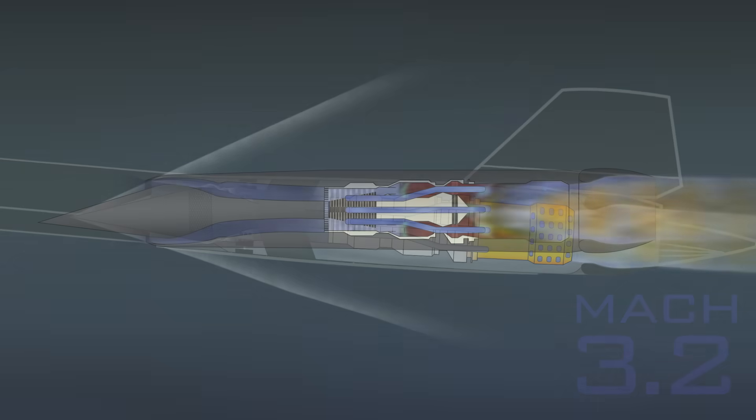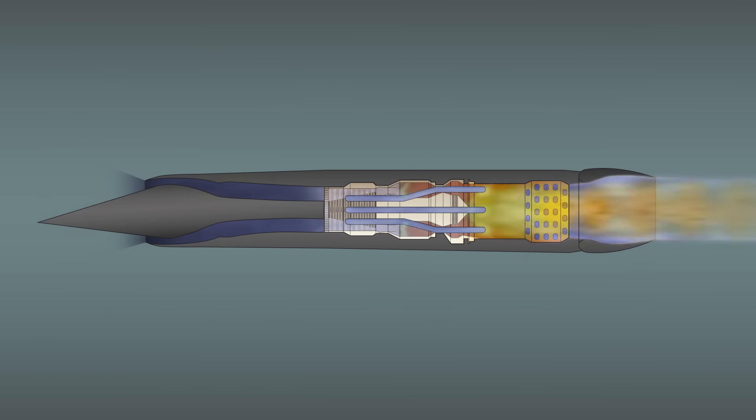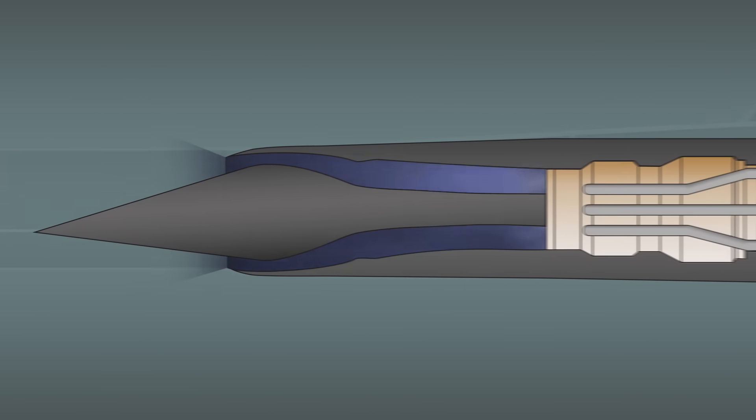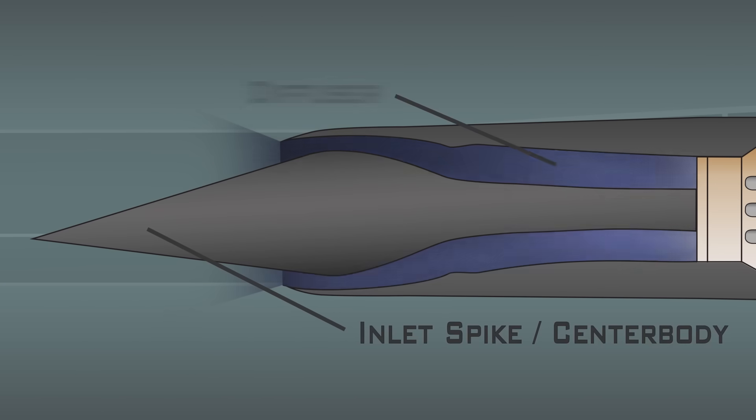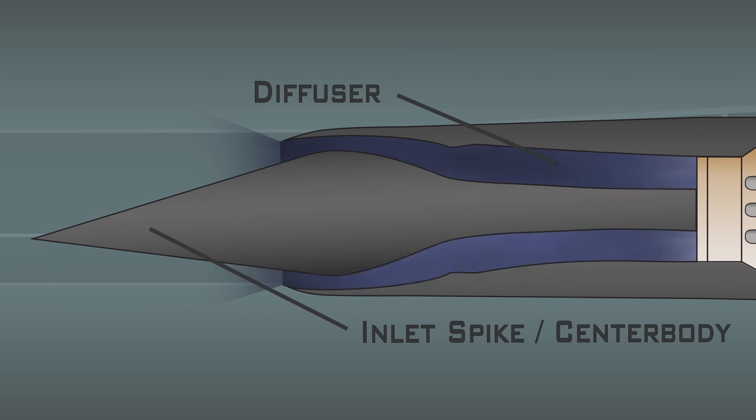The Blackbird's inlet design is as important to allowing the J58 to do its thing as the engine itself, so let's see how it works. In the middle of the inlet is this symmetrical spike, called the inlet spike or center body, and behind it is the diffuser, where compressed air spreads out before entering the engine.